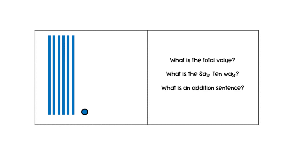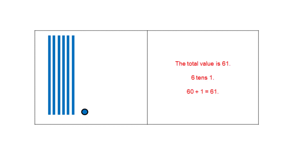What is the total value of this picture? What is the say-ten way? What is an addition sentence? The total value is 61 because there are 6 quick tens and 1. The say-ten way is 6 tens and 1, and an addition sentence is 60 plus 1 equals 61.